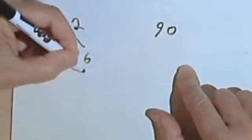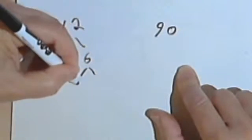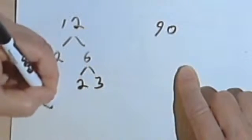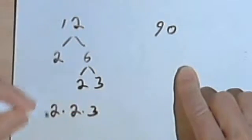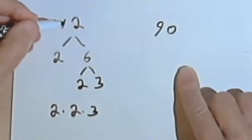I've got another even number, so I'll divide the 6 by 2 and get a 2 and a 3. And what that tells me is that 2 times 2 times 3 equals 12.